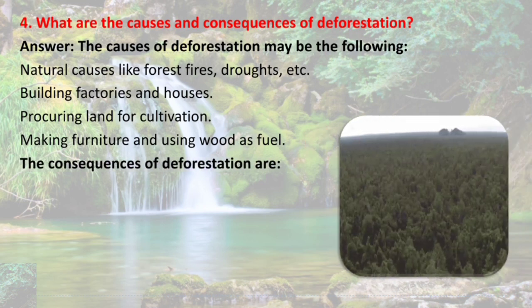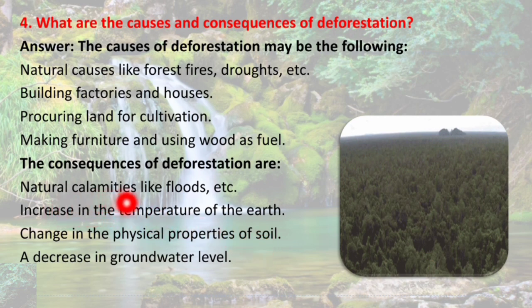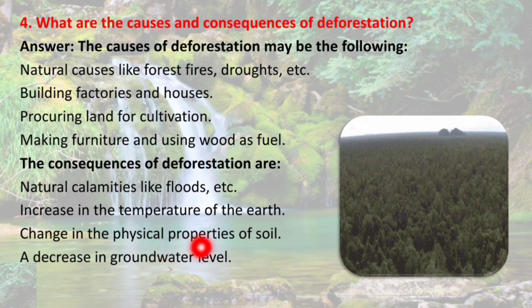The consequences of deforestation are: natural calamities like floods, increase in the temperature of the earth, change in the physical properties of soil, and decrease in the groundwater level. Earth's temperature is increasing day by day, soil physical properties change, and groundwater level decreases because soil's water holding capacity decreases. These consequences are very dangerous for the future.